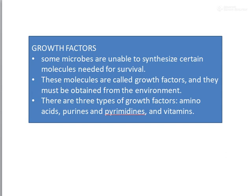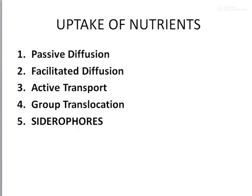Now that you have an idea about the nutrients needed by microorganisms, let us see how they can uptake all these nutrients. First and foremost, we should keep in mind that if a nutrient has to enter into the bacteria, it should be soluble in water and it should move across the plasma membrane to enter into the bacterial cell. If it is insoluble in water and unable to move across the plasma membrane, the bacteria will not get that nutrient. Bacteria use mainly five different mechanisms: passive diffusion, facilitated diffusion, active transport, group translocation, and cytochromes.